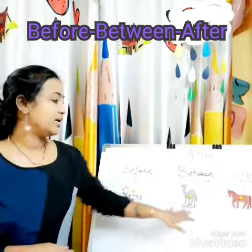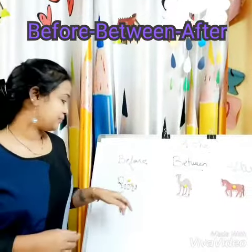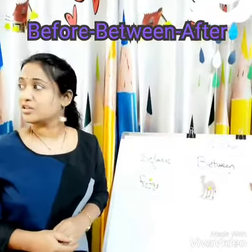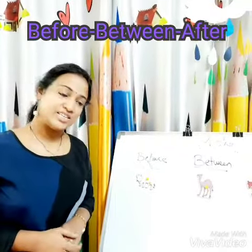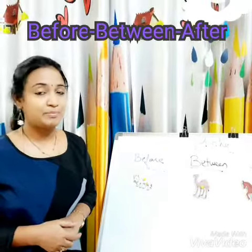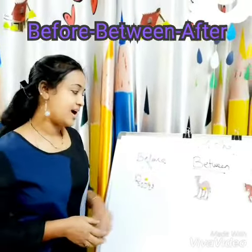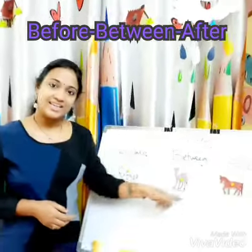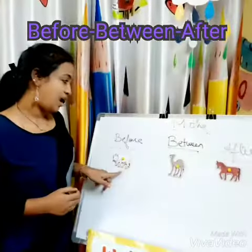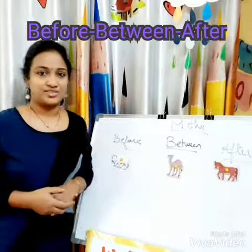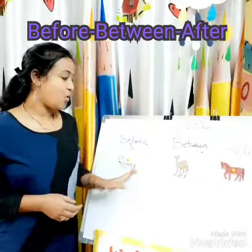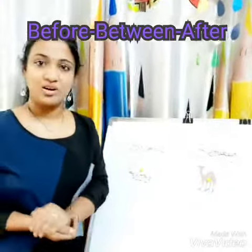Okay children, so here animals are there: cow, camel and a horse. So now you tell me which is the between animal. Which is the between animal? Yes, it's camel. Camel is between cow and a horse.